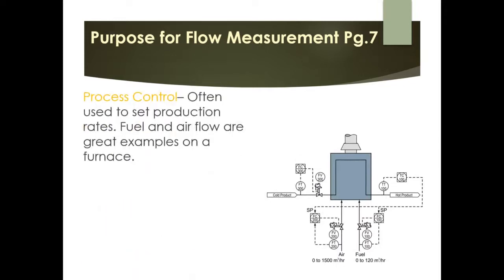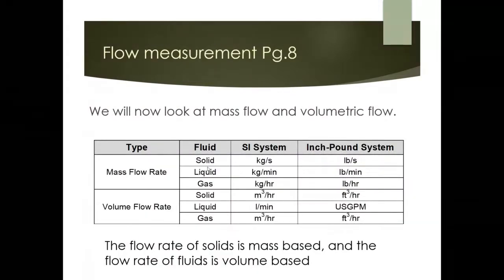The fourth application is process control. We often use this to set production rates in a facility. A great example from the ILM is the fuel and airflow used on a furnace — critical flow measurements used for process control to adjust for efficiency and pollution control, which is a major component of this year's curriculum.